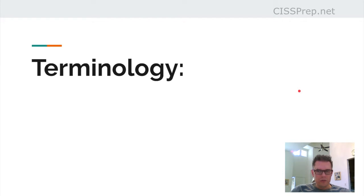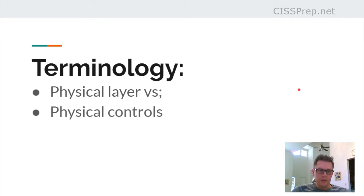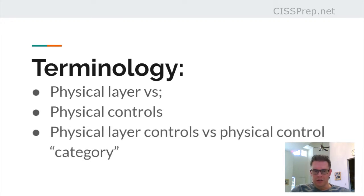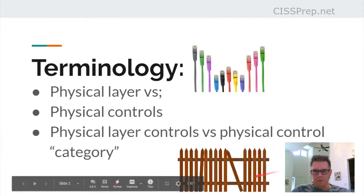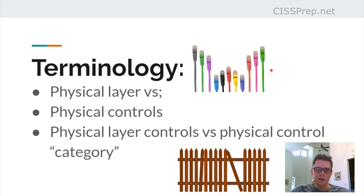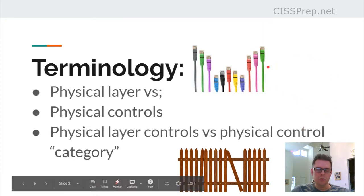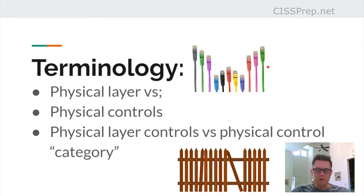Some terminology you should be aware of before getting started: there is a difference between physical layer and physical controls. Make sure you understand the difference between what the physical layer is — pushing bits between devices — and a physical control category. For example, a fence would be a physical control, whereas unshielded twisted pair would be a control applied at layer 1. Terminology is very important on this exam, so make sure you have a firm understanding of terms that are similar to one another.